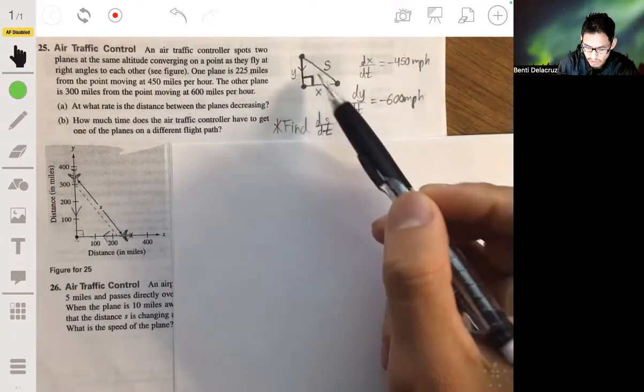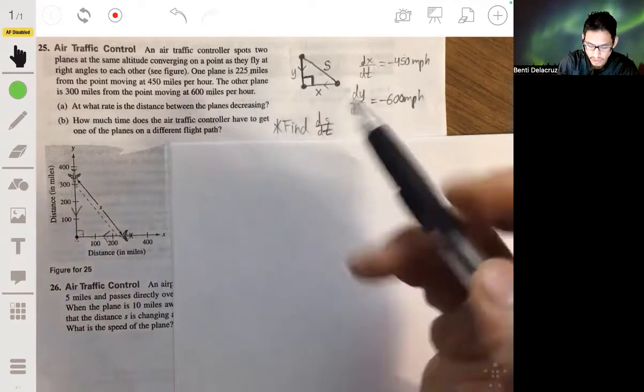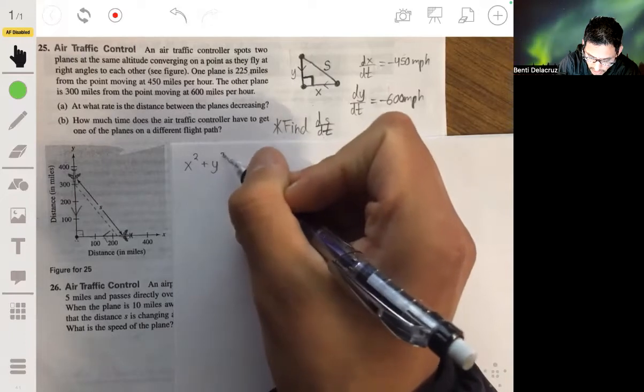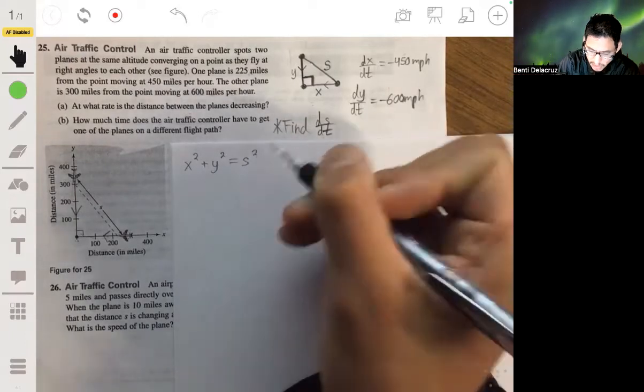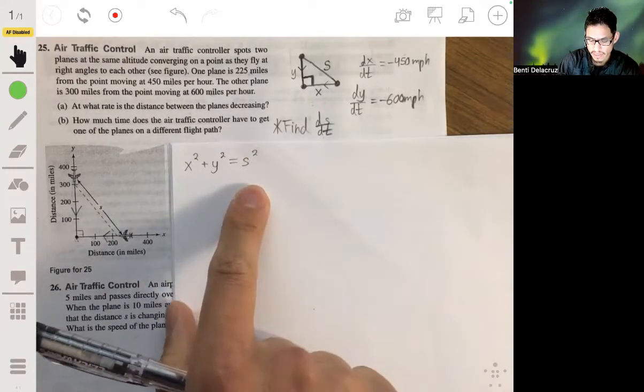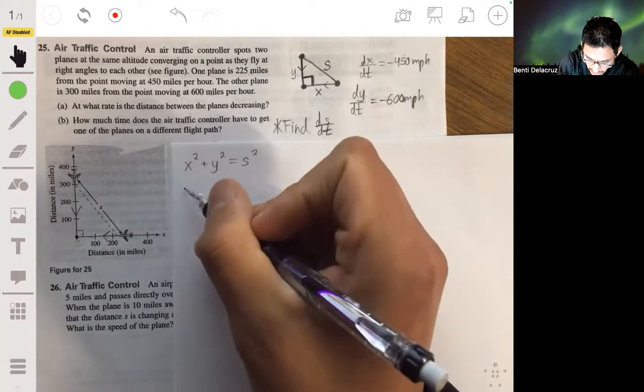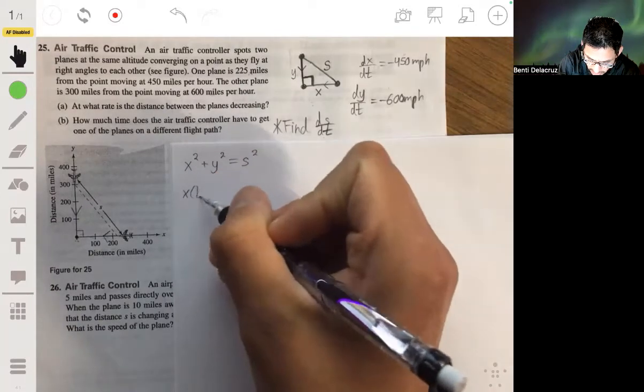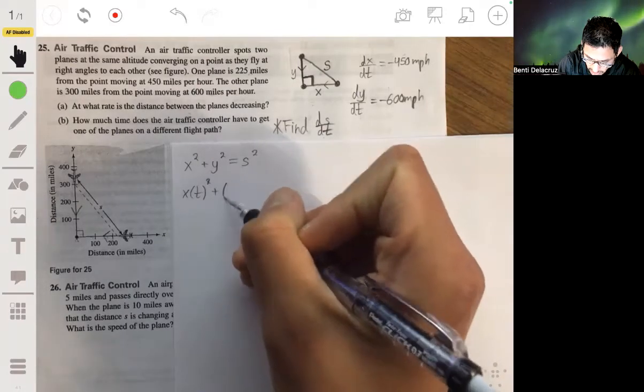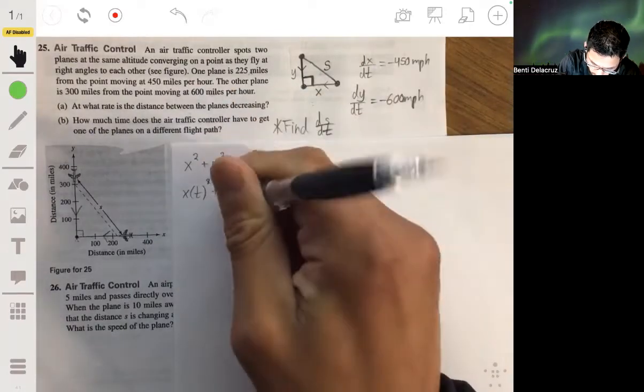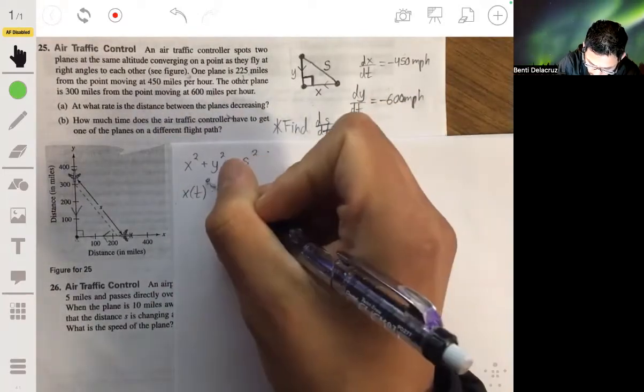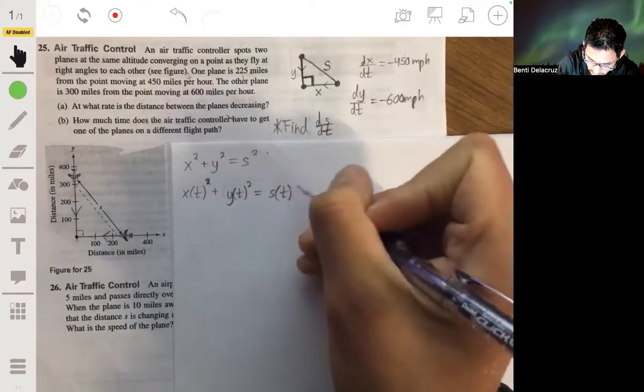Alright, so this is a right triangle, so we can use the Pythagorean theorem to relate X, Y, and S. So that's X squared plus Y squared equals S squared. And then we can differentiate this with respect to time because they're all functions of time. We have essentially X of t, that whole function being squared, plus Y of t, that whole function being squared, equal to S of t, that whole function being squared.